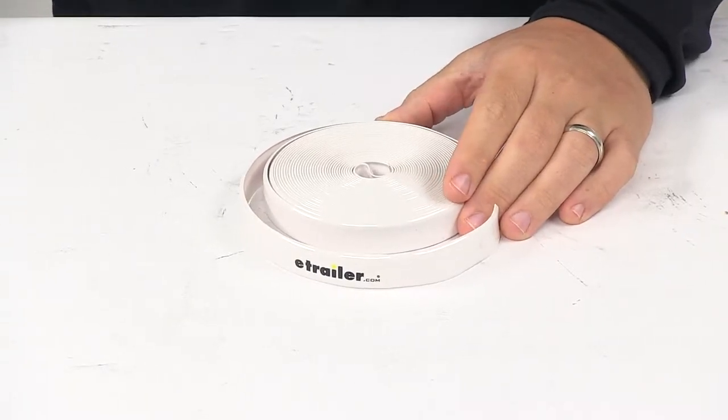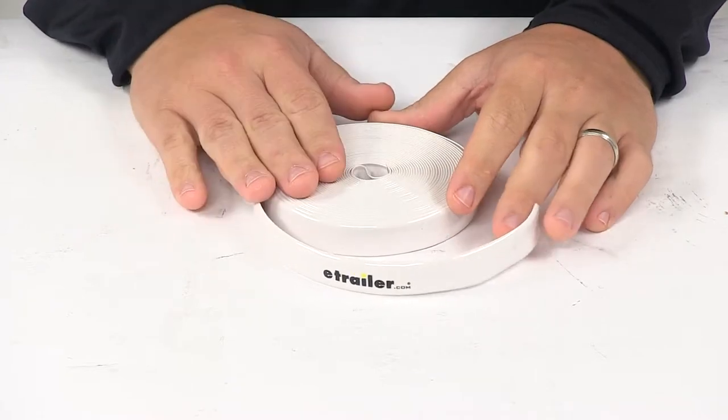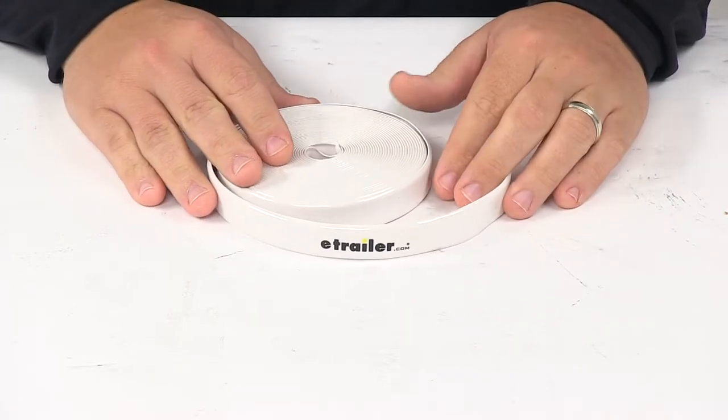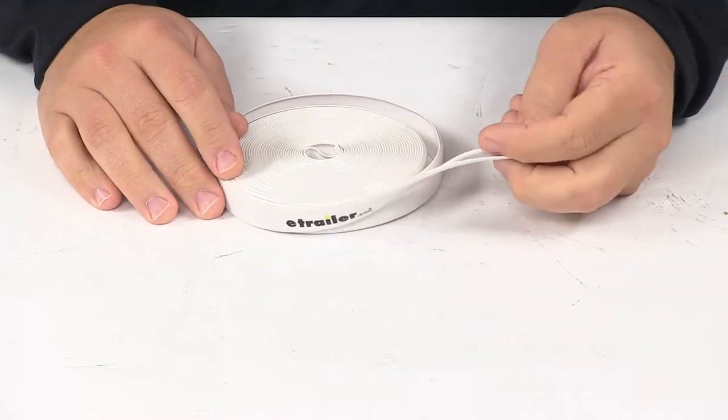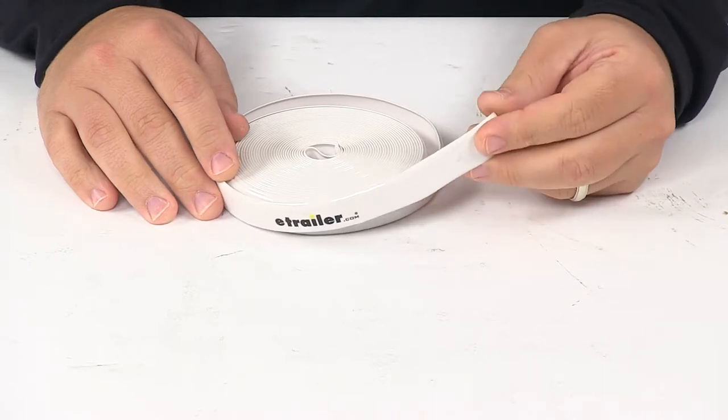Today we're taking a look at a Camco RV vinyl trim insert. This white insert replaces cracked or stained trim on your RV's aluminum roof edge or trim molding, or on a truck bed camper shell.